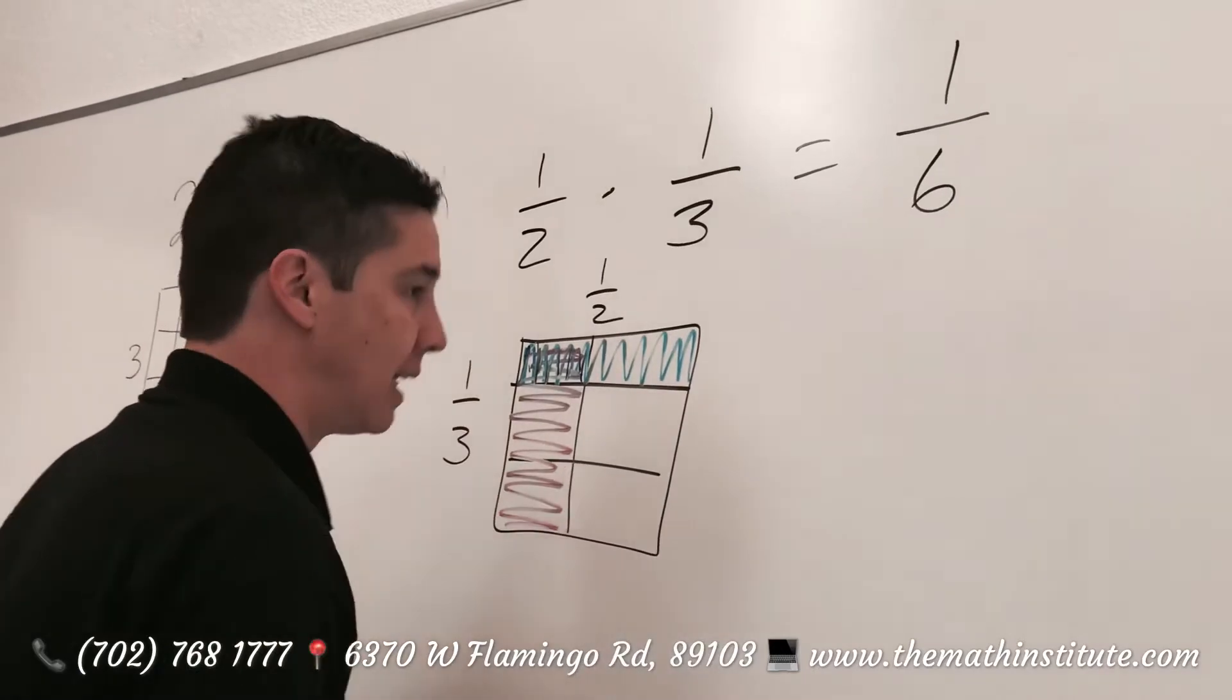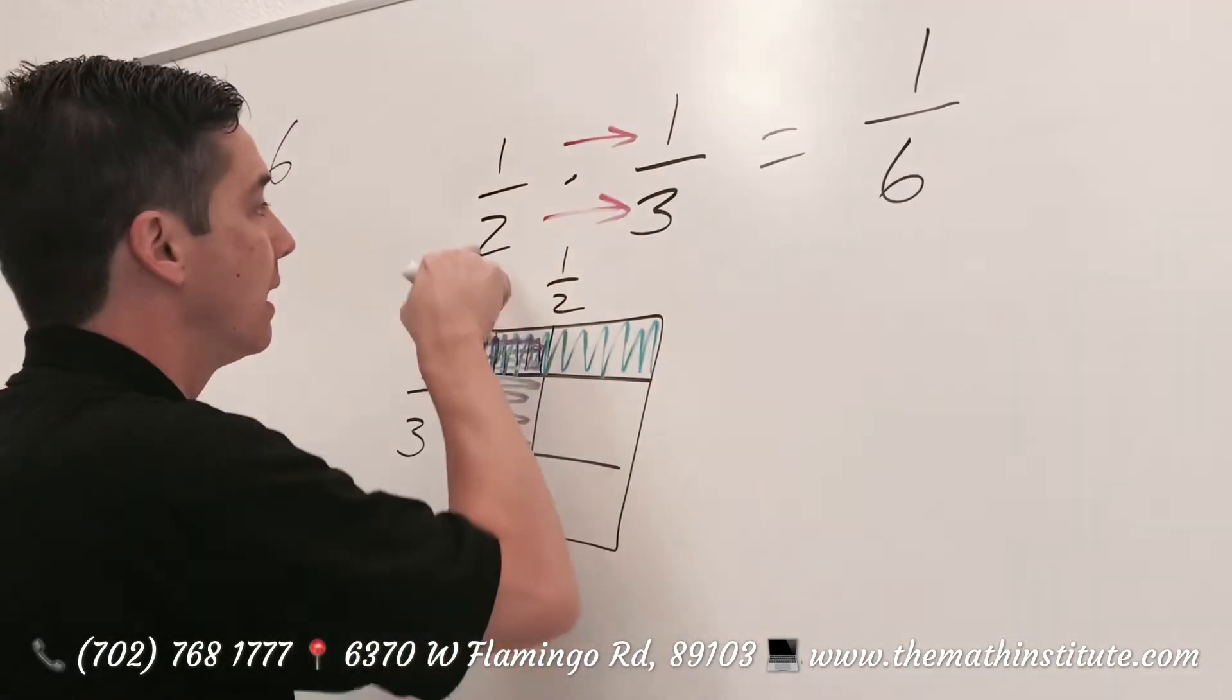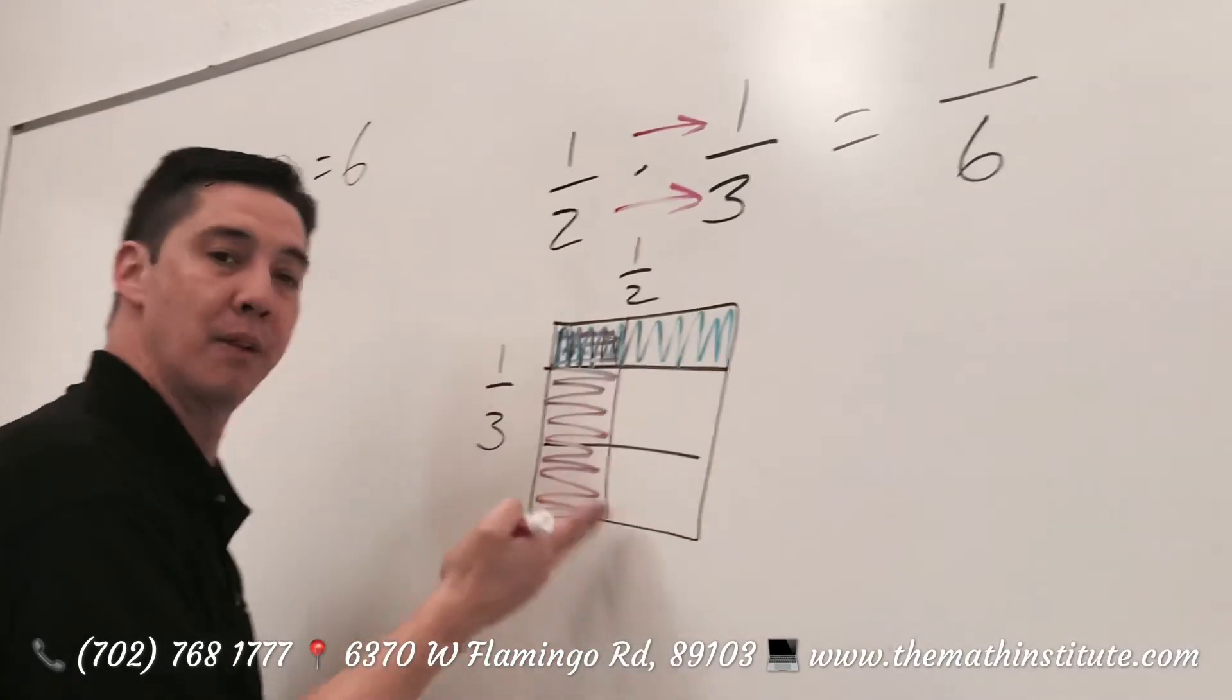Very simple. All you do is multiply across. 1 times 1 is 1, 2 times 3 is 6. 1 sixth.